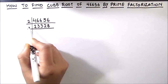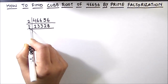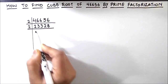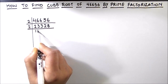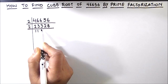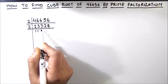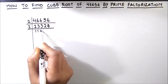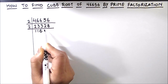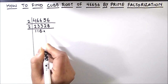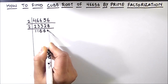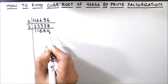Again this is an even number so we can use 2 as the prime divisor. 2 times 1 is 2, 2 times 1 is 2, 1 is remainder then we drop down 3. This becomes 13, 2 times 6 is 12, then 1 is remainder, we drop down 2, then 2 times 6 is 12 and 2 times 4 is 8.